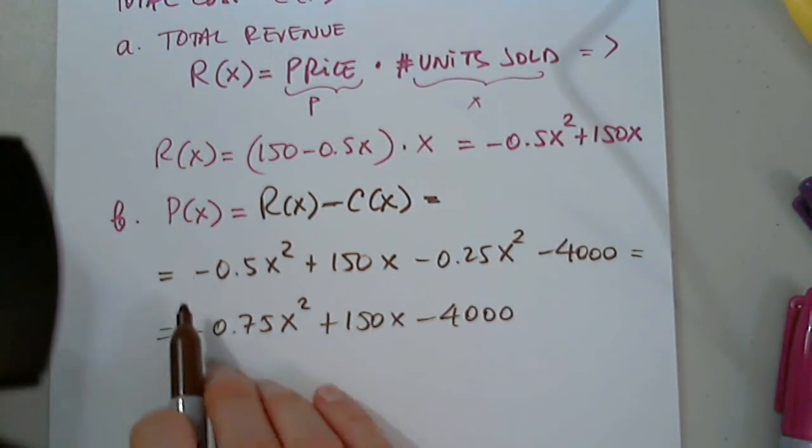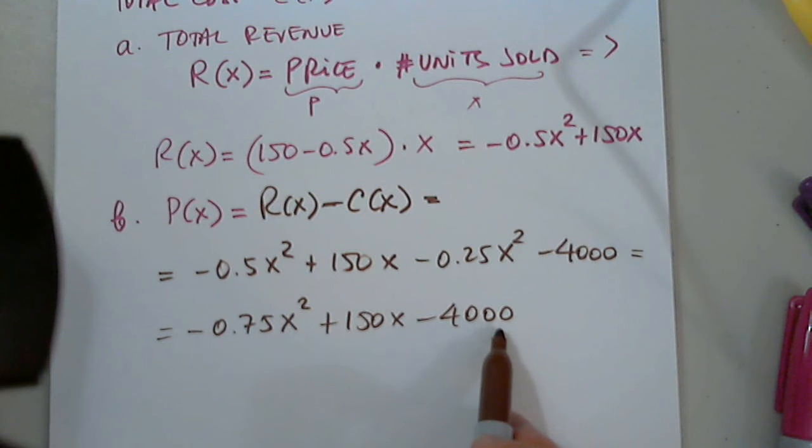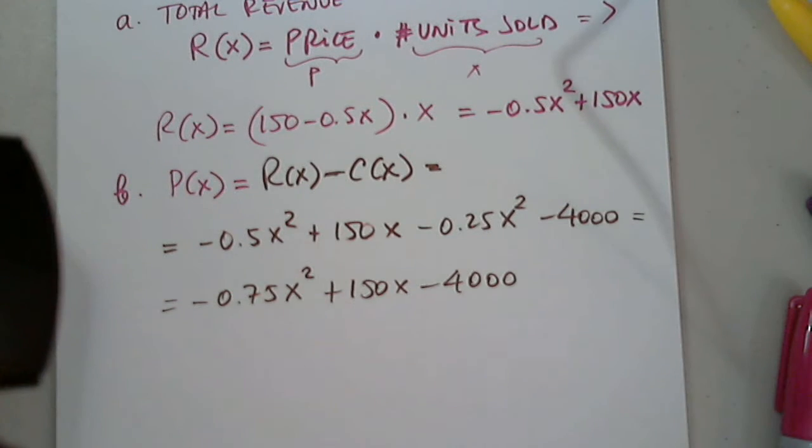We combine our terms. Negative 0.5 or negative 0.25 is negative 0.75X squared. The next in line is positive 150X and, of course, negative 4,000. What type of function is this? Can anyone tell us what type of function is this? Thank you very much. Blake, great. Good.